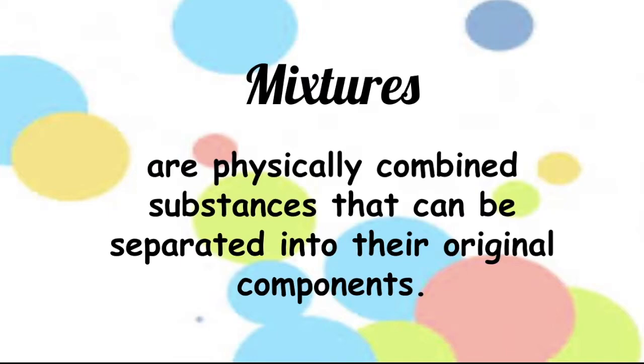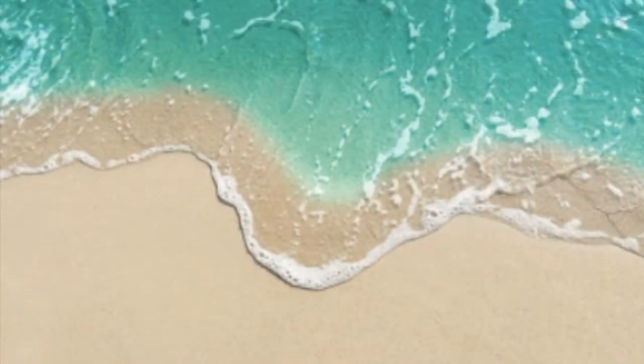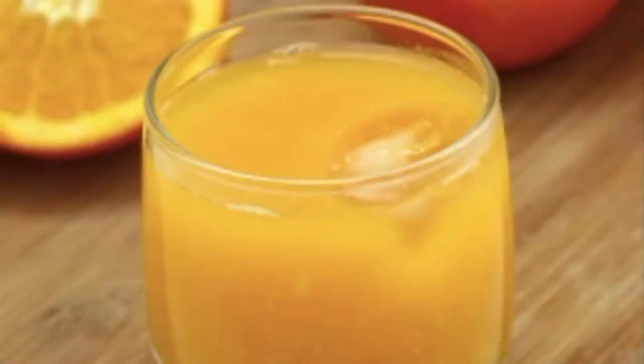Mixtures are physically combined substances that can be separated into their original components. Now, let's have some examples of mixture. We have here blood, seawater, salad, cement, ice cubes in a juice, and many more.